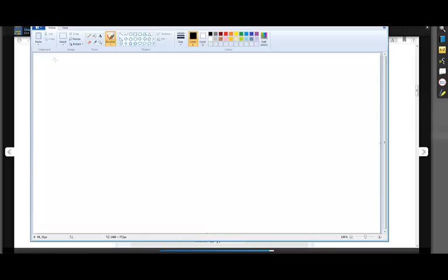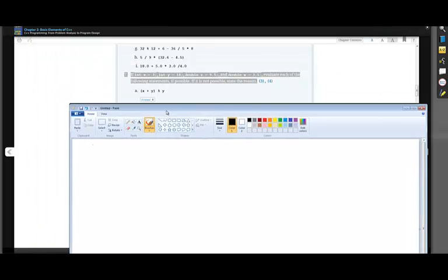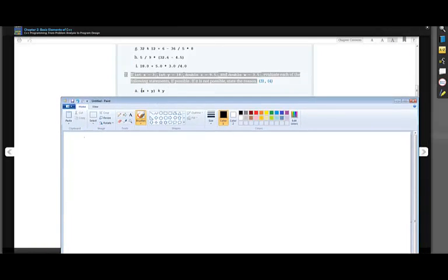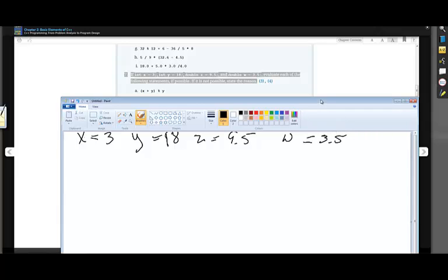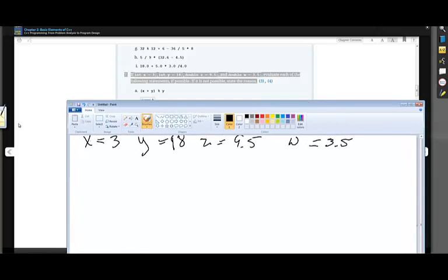And on here, what you're going to see is what I'm going to do is I'm going to use, remember now, X in this problem. Let me just put it on here so we can actually keep going tab with this thing. So if X is going to be equal to three, Y is equal to 18, and Z is 9.5, and W, you have four variables. So you have to use the expression that's in here.